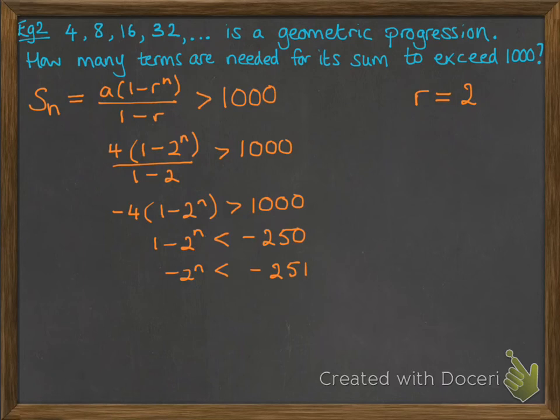Then we take off 1 from both sides and we get negative 2 to the power of n is less than negative 251. Now we want to multiply by minus 1 to get rid of those negatives, which means we have to reverse our inequality again.